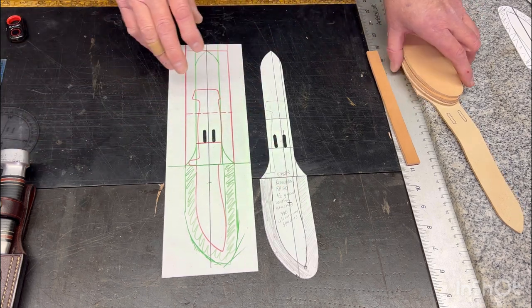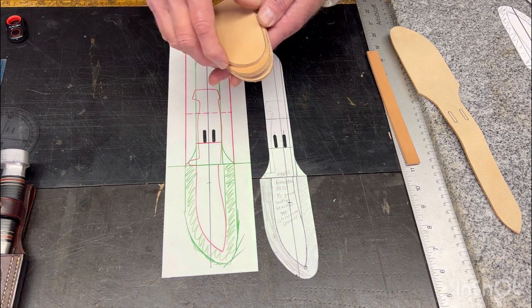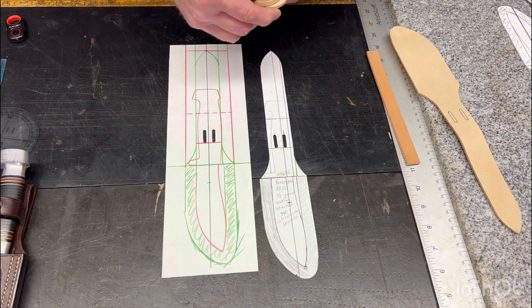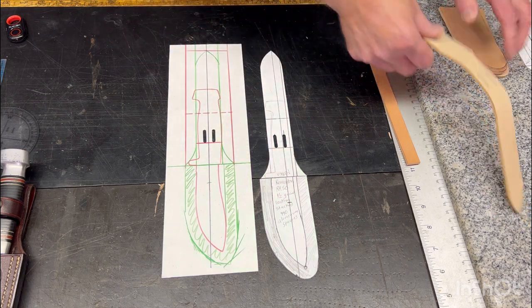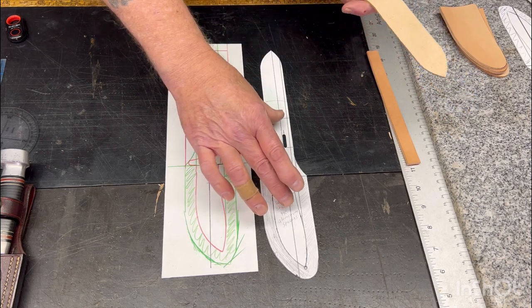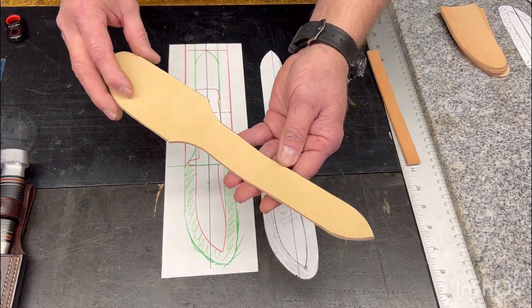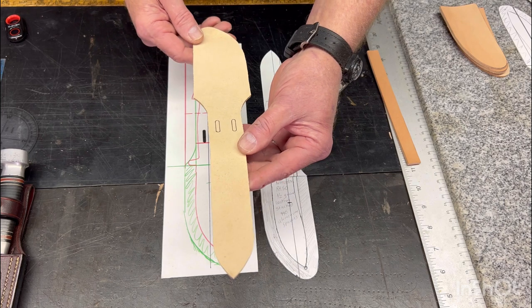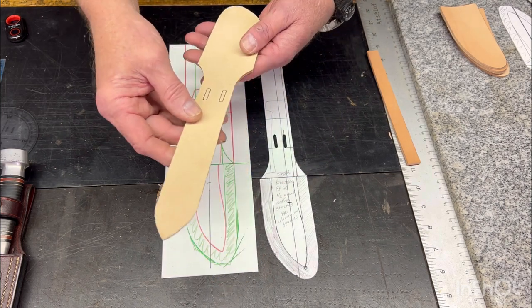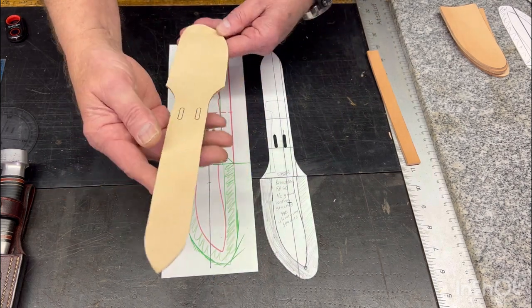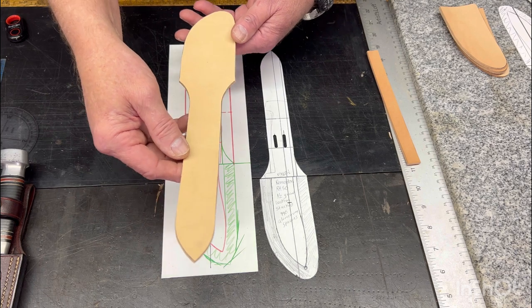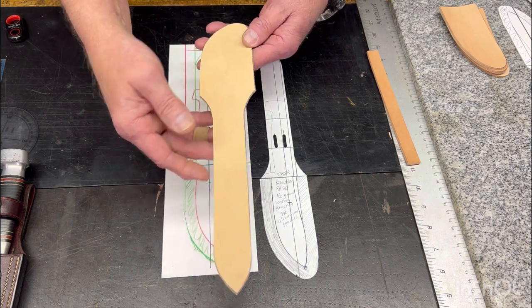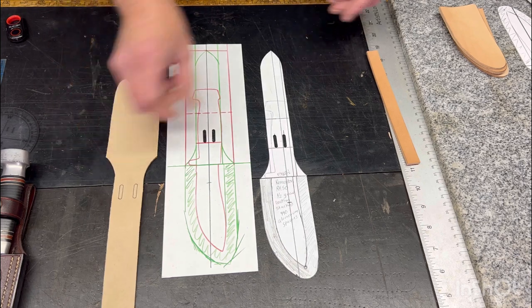And then once you get the pattern cut out, you'll get quality 8 to 10 ounce veg tan leather, nice firm. And you'll cut out your main back piece first. So you take the full pattern and you cut out your back piece. And think about that for just a second before you cut it out, right hand versus left hand. Sometimes my brain fights me on that. So think about that, cut that out.